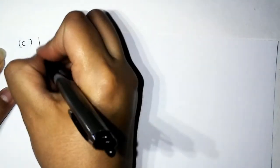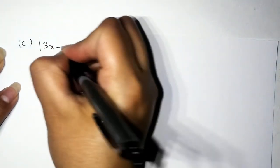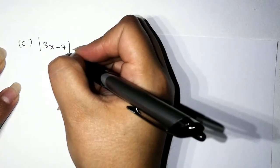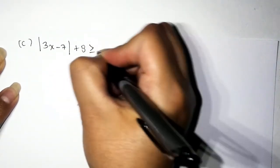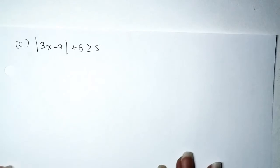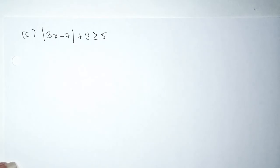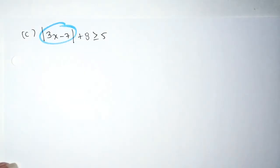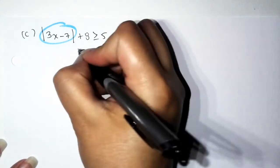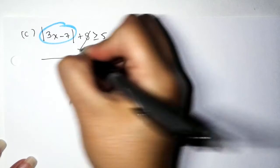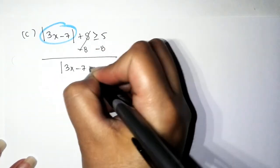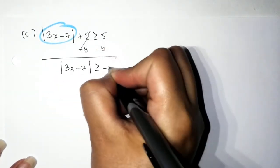Problem C: absolute value of (3x − 7) plus 8 is greater than or equal to 5. Absolute value inequality — let's GORLAND it, but first isolate the absolute value. Subtract 8 from both sides: the absolute value of (3x − 7) is greater than or equal to −3.